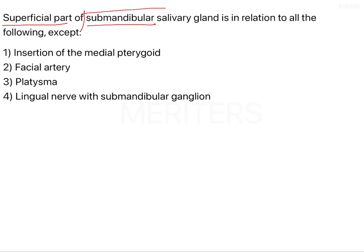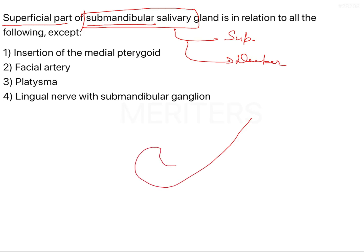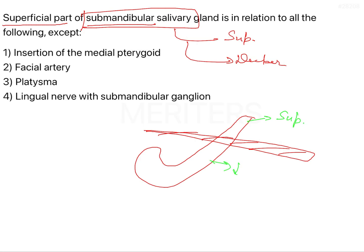The submandibular salivary gland has two parts: a superficial part and a deeper part. This gland is divided into superficial and deeper portions by a muscle. Suppose this is a J-shaped gland — the muscle that divides it is the mylohyoid muscle, making one portion superficial and the other deeper.